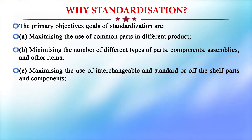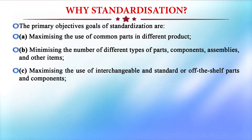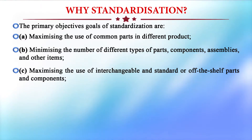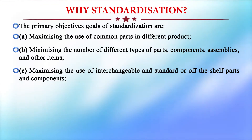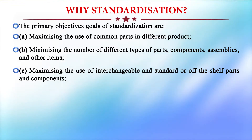Maximizing the use of interchangeable and standard off-the-shelf parts and components is also an objective. A produced part can be interchangeable. For example, brake shoes are common for any type — Hero Honda, Yamaha, Bajaj, or TVS. The brake shoes are common to use. That is interchangeability.